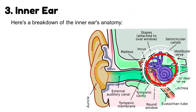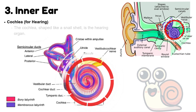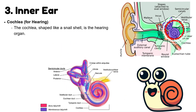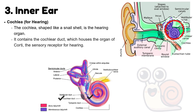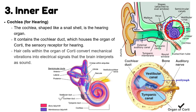Here's a breakdown of the inner ear's anatomy. Cochlea, for hearing — the cochlea, shaped like a snail shell, is the hearing organ. It contains the cochlear duct, which houses the organ of Corti, the sensory receptor for hearing. Hair cells within the organ of Corti convert mechanical vibrations into electrical signals that the brain interprets as sound.